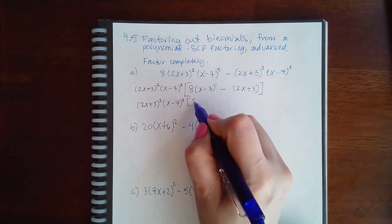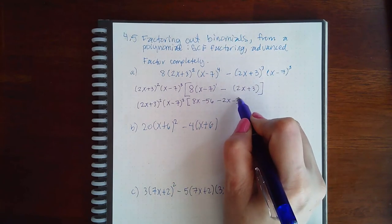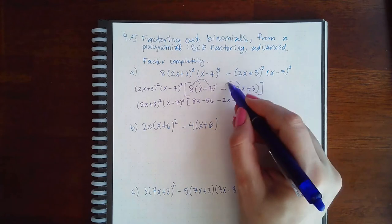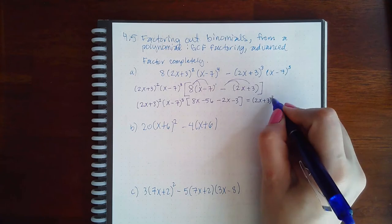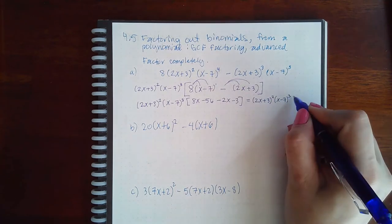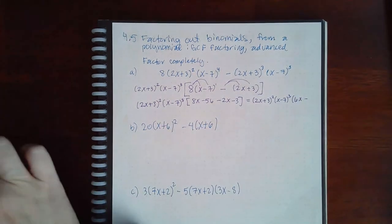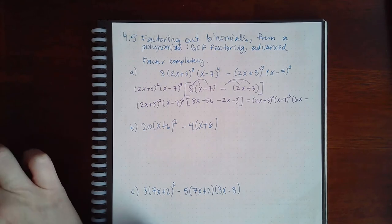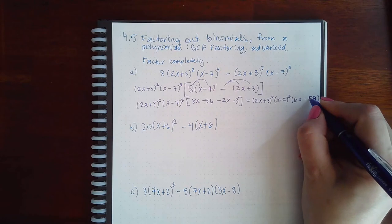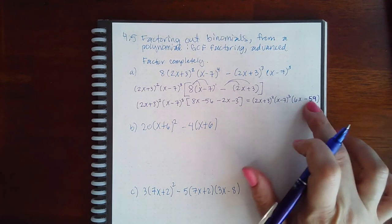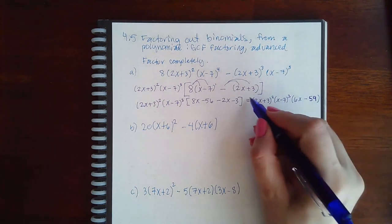Then if I simplify that expression inside the brackets, I have 8x minus 56 minus 2x minus 3, just by distributing the 8 and distributing this negative. And then if I keep simplifying further, we get 6x minus 56 and 3. I should know better, that's 59. 59 is prime, so I'm not going to be able to factor anything out between these two. Therefore this is my final factorization.